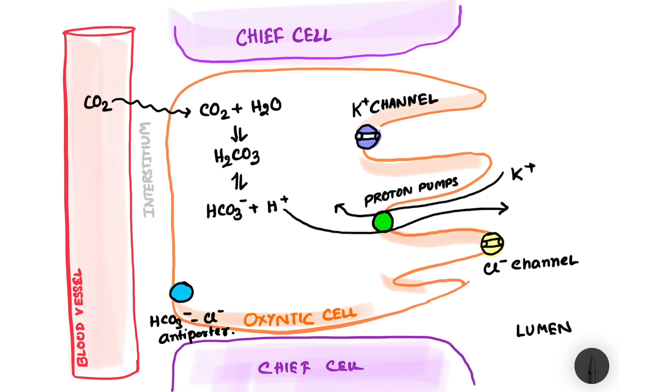Now to make this pump work continuously we need an unlimited supply of potassium in the luminal site. So the potassium that enters the cell moves out of the cell through the potassium channel and goes into the lumen and thus the potassium goes in a cyclic manner to keep an unending source of potassium for the proton pump to work.